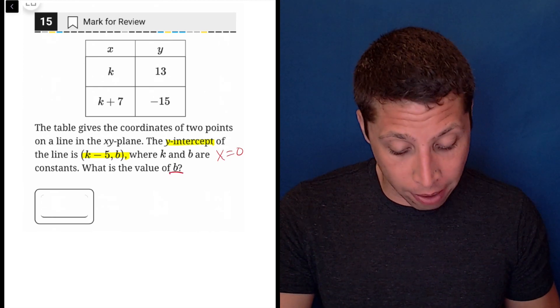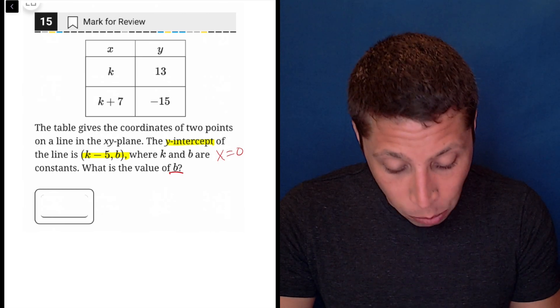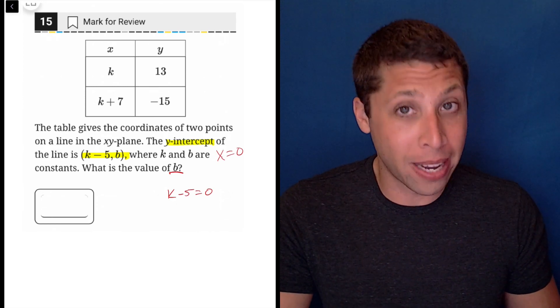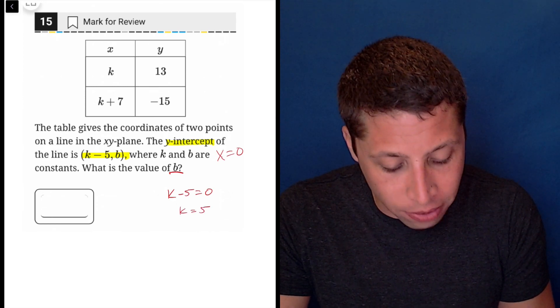But the k-5, well that's just equal to the x, that's the zero. So I have a mini-equation that I can solve very easily. k-5 is zero, therefore k is 5.